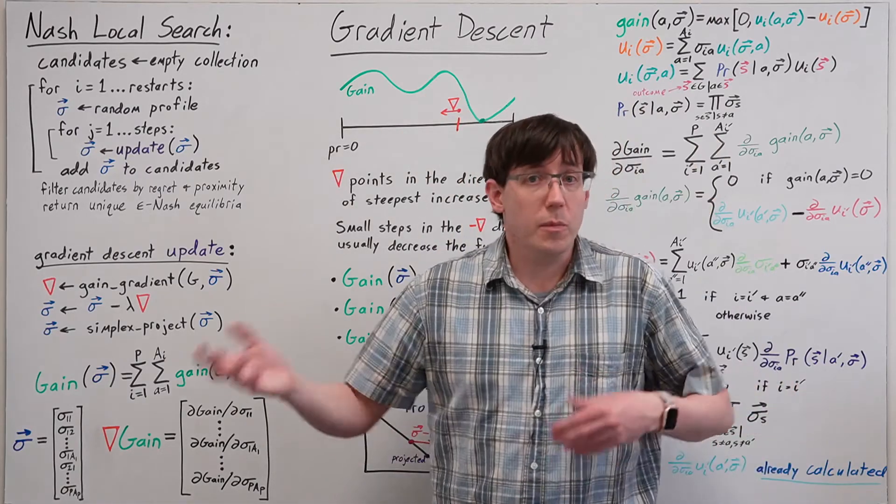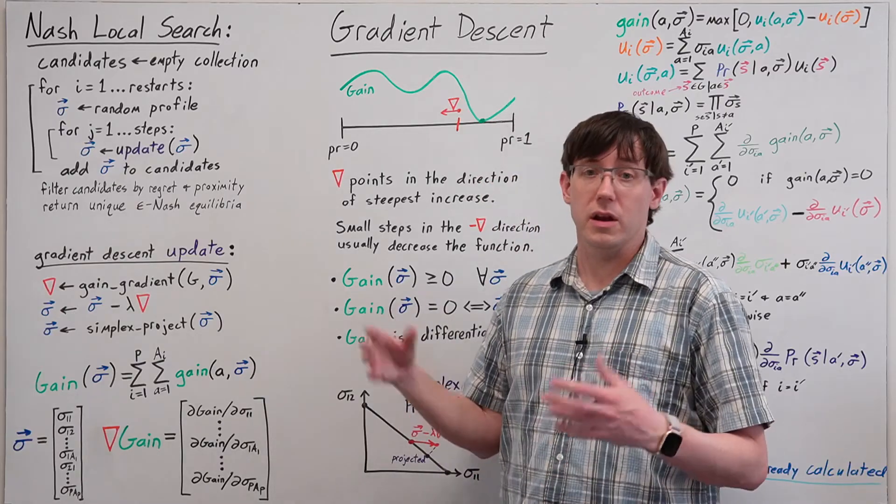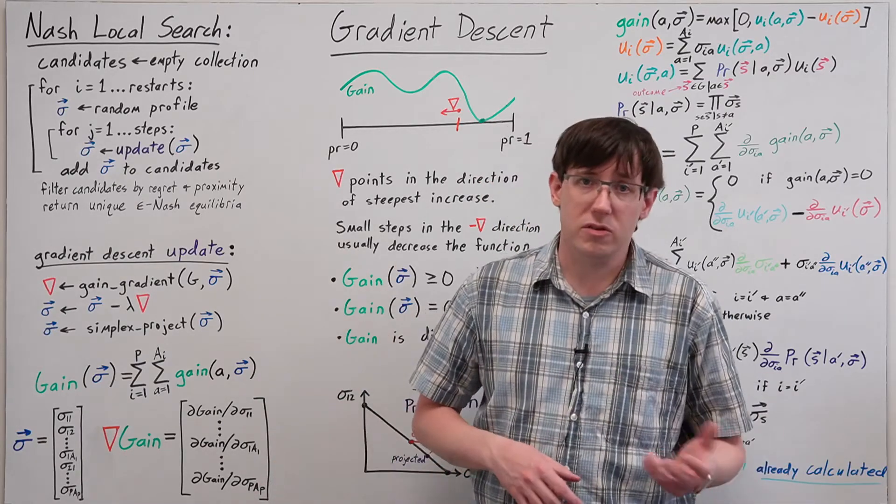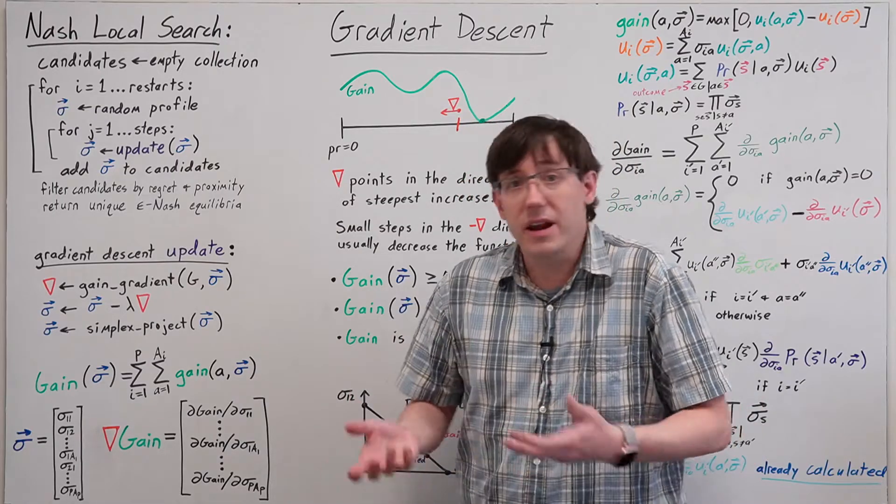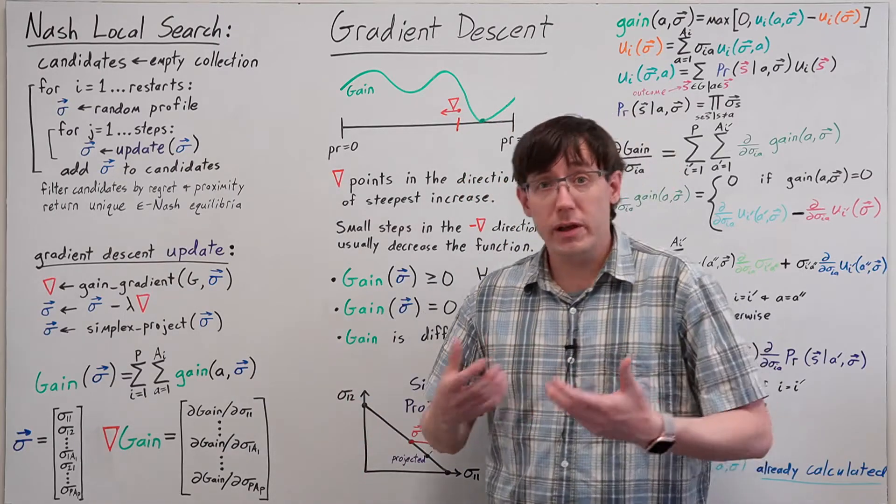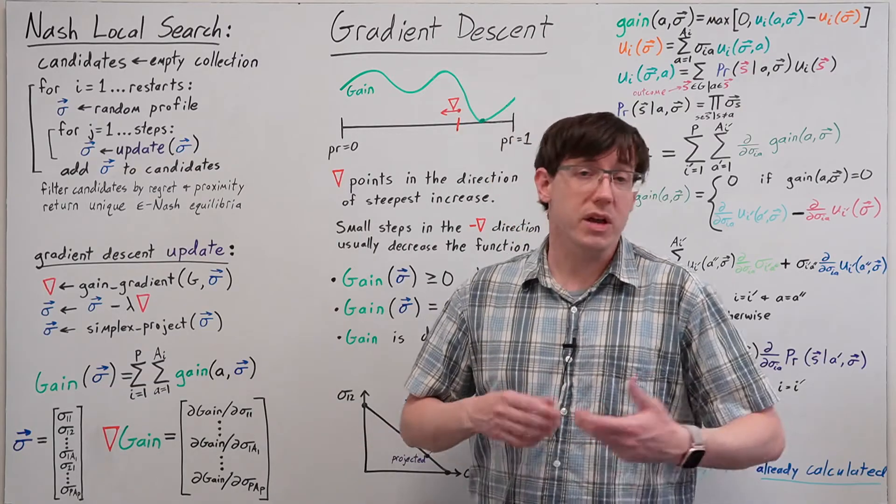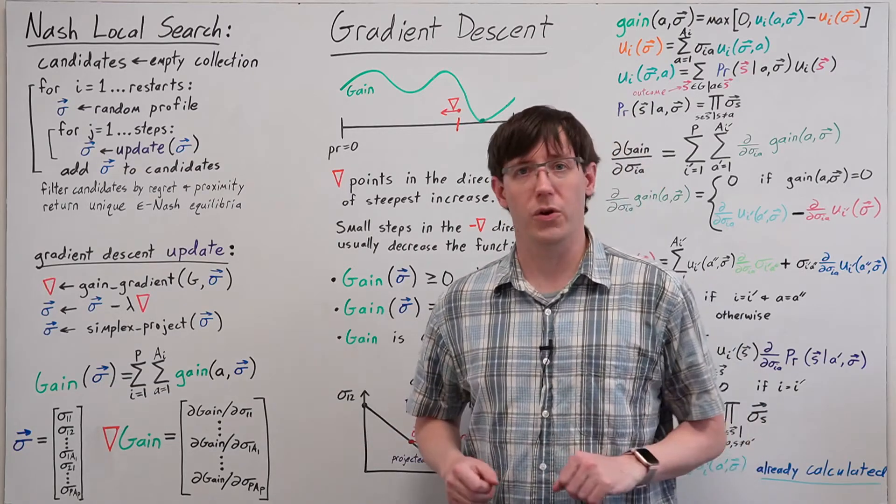There are certainly some complications that arise in higher dimensions from saddle points and other weird topologies, but gradient descent and its variants have been very thoroughly studied and optimized because of their importance in training neural networks.